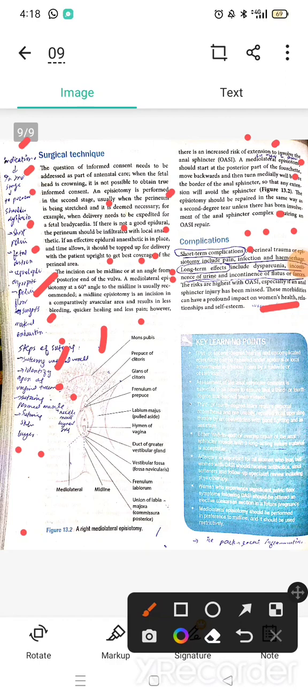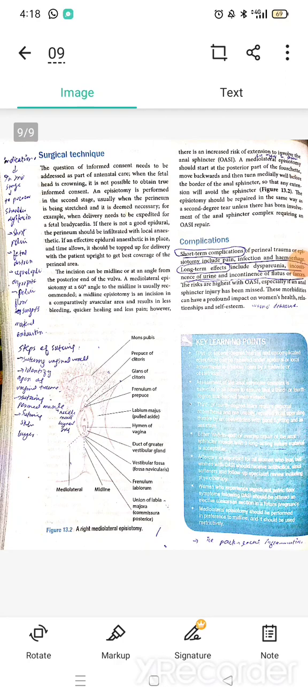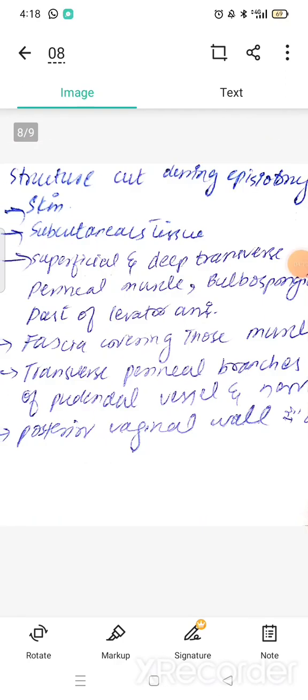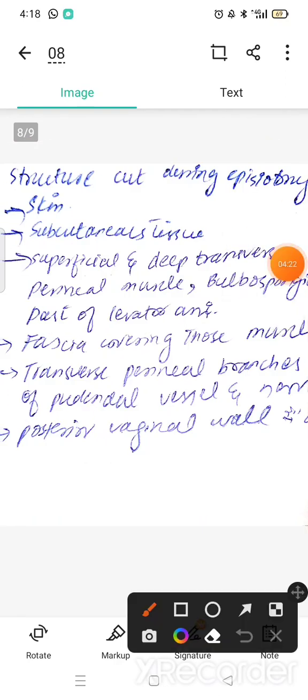This is important to know which structures are cut. First, the skin is cut, then the tissue, then the superficial and deep transverse perineal muscles, then the bulbospongiosus, and then part of the levator ani. The fascial coverings, the transverse perineal branches, and the posterior vaginal wall.